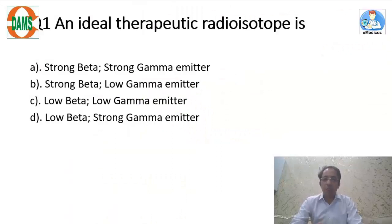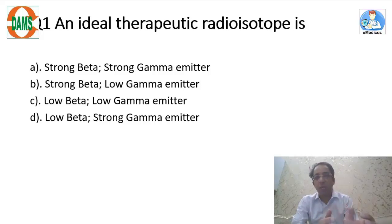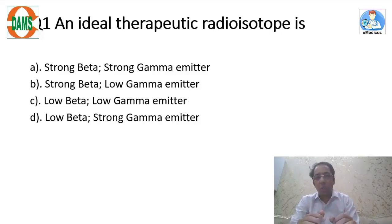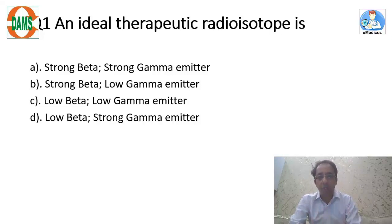This is a previous NEET question selected for this paper: ideal therapeutic radioisotope. A therapeutic radioisotope means giving an isotope systemically to kill the tumor. To kill the tumor, we need beta emission, so the answer is either A or B because both options describe strong beta emission.